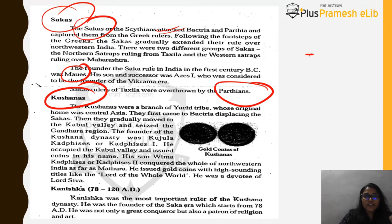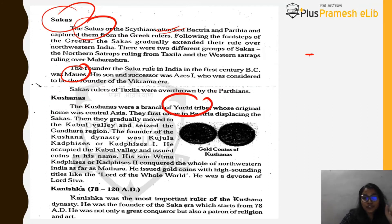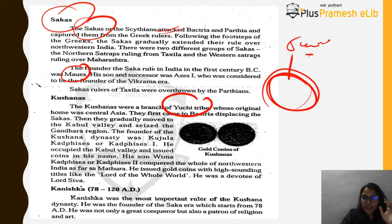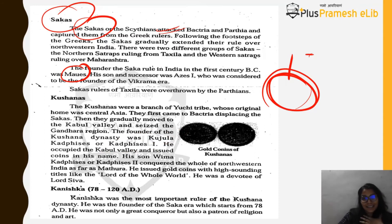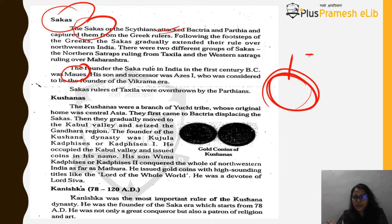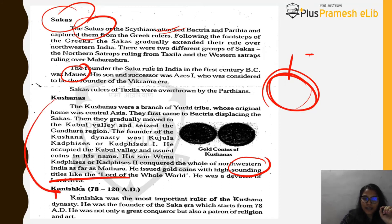The Kushanas were a branch of the Yuezhi tribe whose original home was Central Asia — the region of modern Kyrgyzstan, Kazakhstan, Turkmenistan, Tajikistan, and Uzbekistan. They first came to Bactria, displacing the Sakas, then moved to the Kabul Valley and seized the Gandhara region. The founder of the Kushana dynasty was Kujula Kadaphises (Kadaphises I), who occupied the Kabul Valley and issued coins. His son Vima Kadaphises (Kadaphises II) conquered northwest India as far as Mathura and issued gold coins.